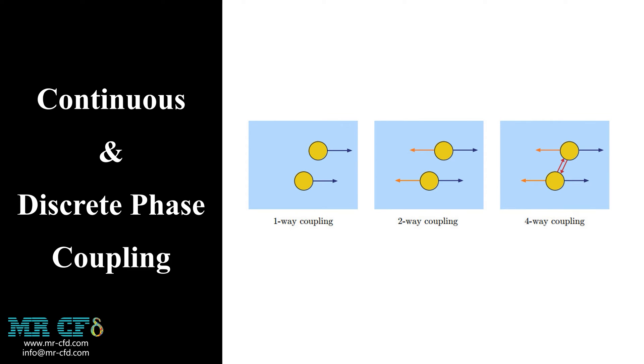When the volume fraction of the discrete phase is low, the continuous phase is dominant in the motion. Thus, the impact of the dispersed phase on the continuous phase can be ignored. It is called the one-way coupling method. It can be applicable to many numerical projects like where we are dealing with sub-micron particles or where the flow rate is very low. Of course, they cannot affect the continuous phase motion.